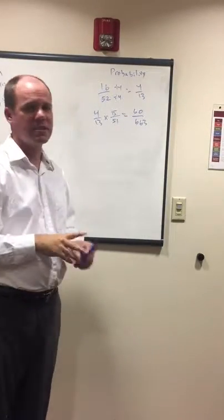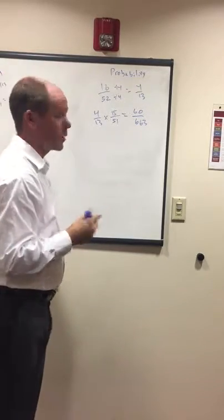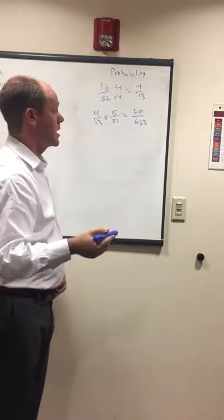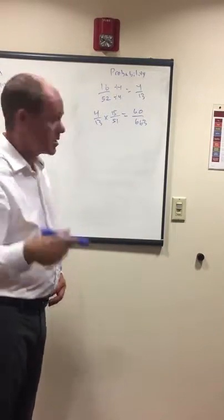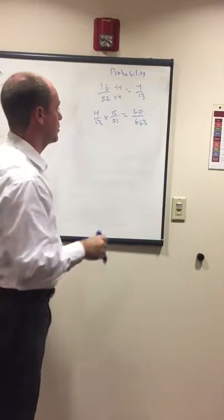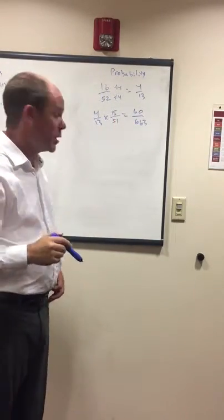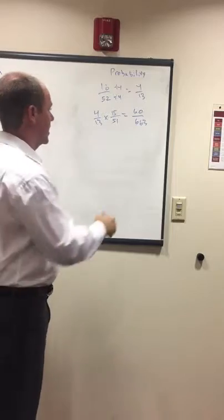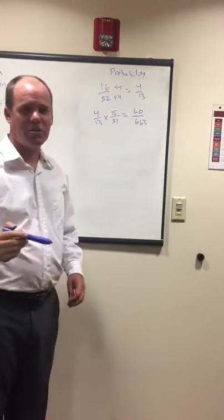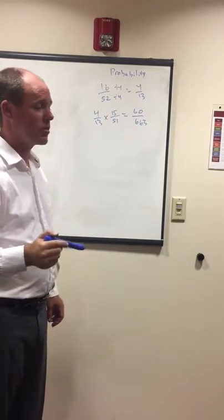That's the answer: 60 out of 663. If they ask for a percentage, you can divide it out. You can estimate: 60 over 600 would be 10 percent, and 60 over 660 would be about nine percent, so you'd be right around nine percent. Anything in that range is almost surely the right answer.